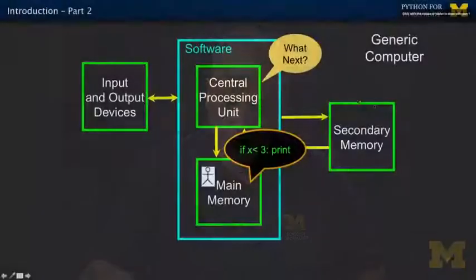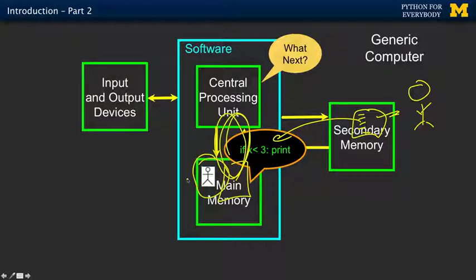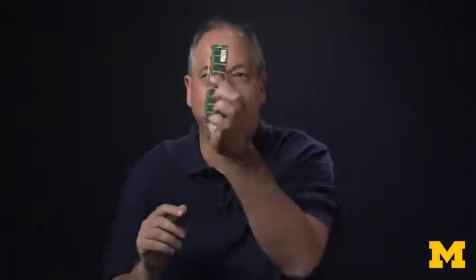Where you live inside a computer is basically in the main memory. When you write a program, you type it in — you outside the computer are typing Python commands into a file, like 'if x less than 3 print.' That gets loaded into the main memory. It's a creative version of yourself — your instructions that are going to be run. That program ends up in main memory, and then it's run. You're living in main memory when your program is actually executing.